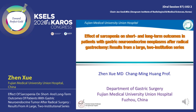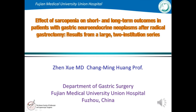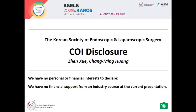Hello, everyone. I'm Zheng Xu from the Department of Gastric Cancer Surgery, Fujian Medical University Hospital, China. Thank you for the chance to introduce the effect of sarcopenia on short and long-term outcomes in patients with gastric neuroendocrine neoplasms after radical gastrectomy, results from a large true exclusion study. We have no personal or financial interests to declare.